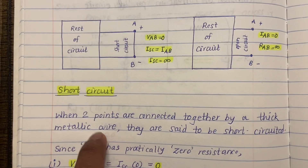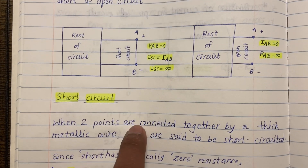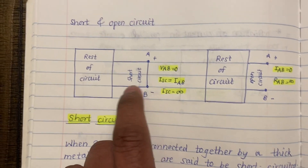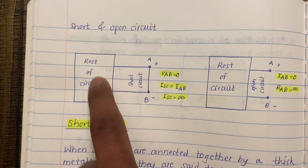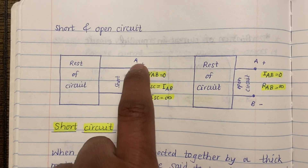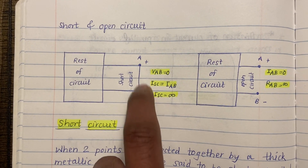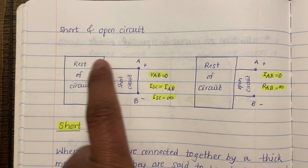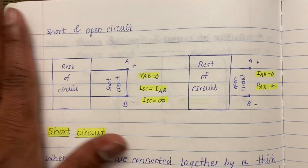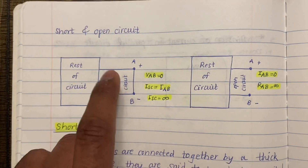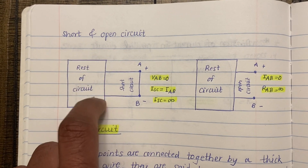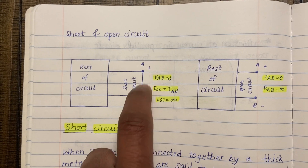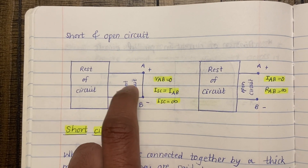So what is a short circuit? A short circuit is when two points are connected together by a thick metallic wire. In this example on the left hand side, point A and point B are connected by a metallic wire — hence this is called a short circuit. The remaining circuit can be anything; that's why I have marked it as the rest of the circuit in a block.